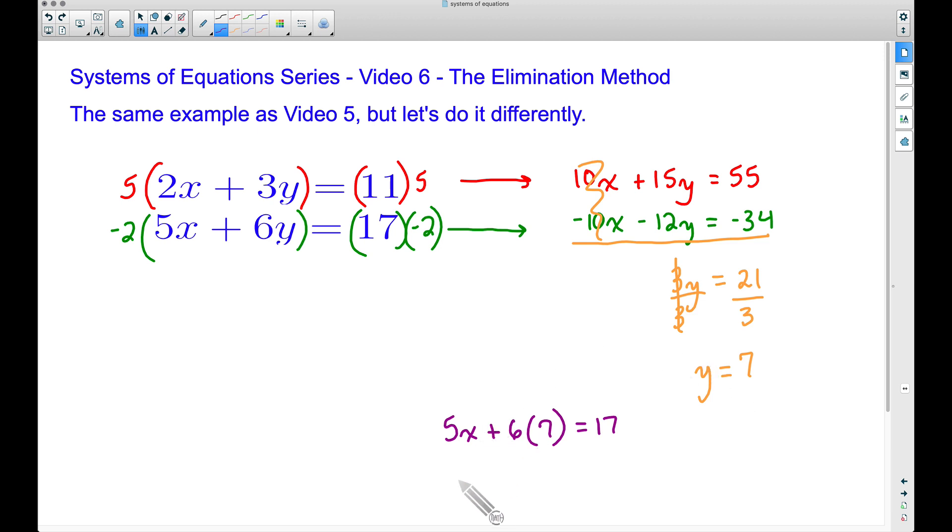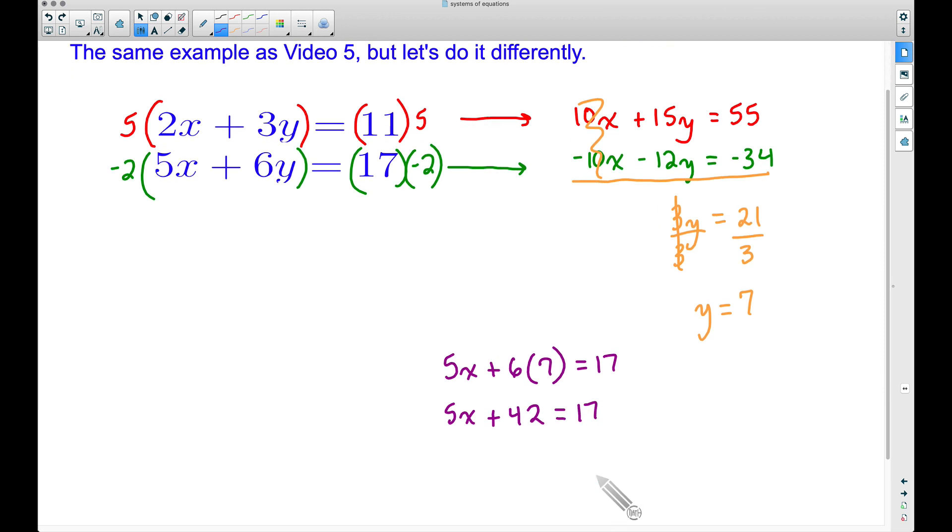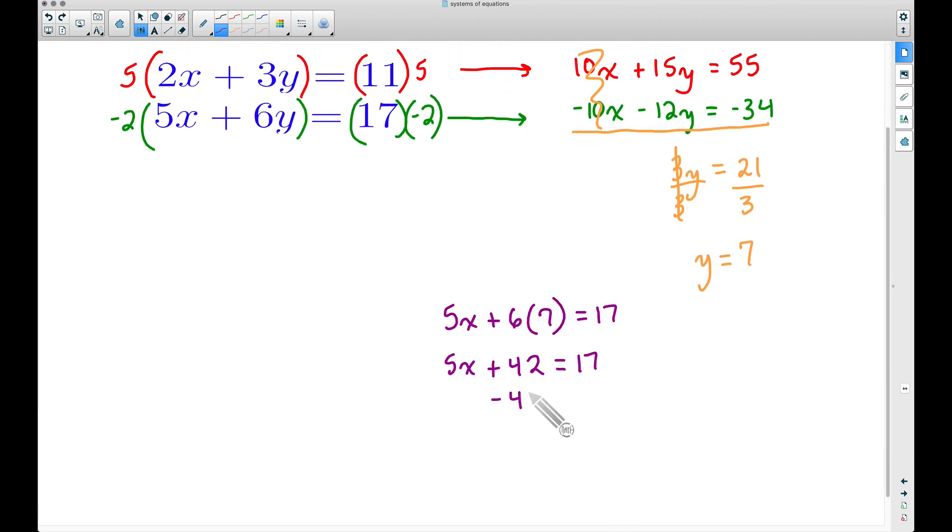Now we can solve for x. Subtracting 42 from both sides, that's going to help us get x by itself. Therefore we have 5x is equal to negative 25.